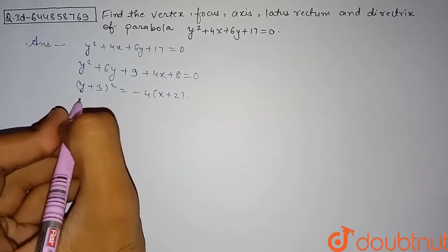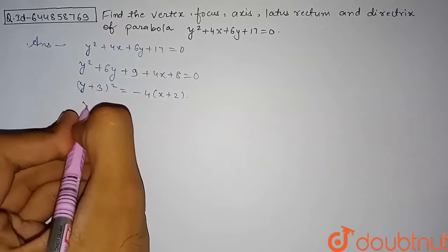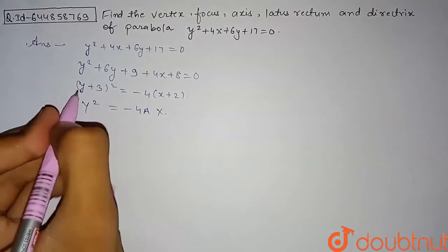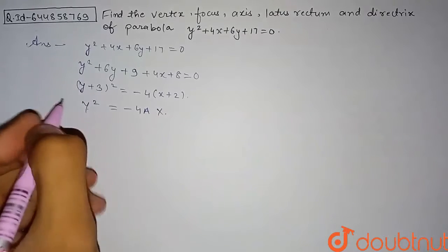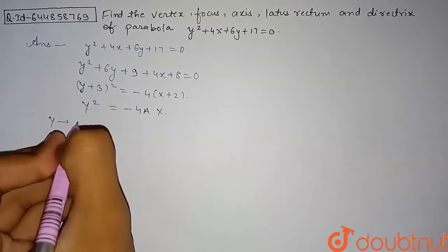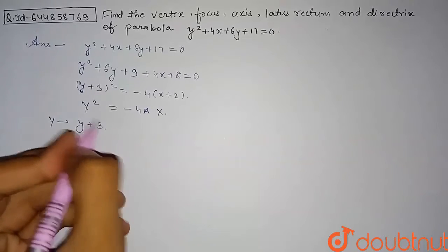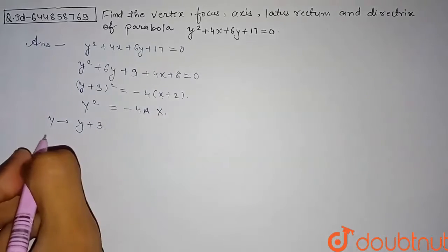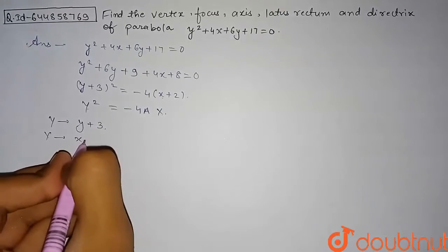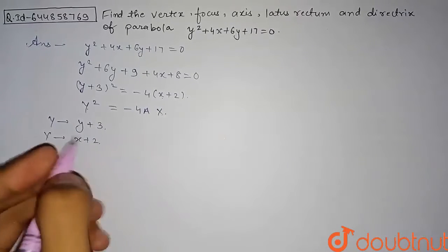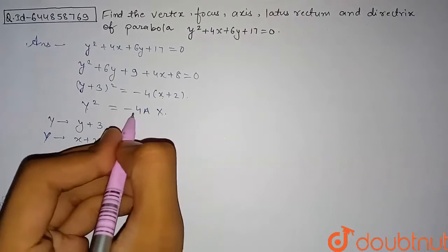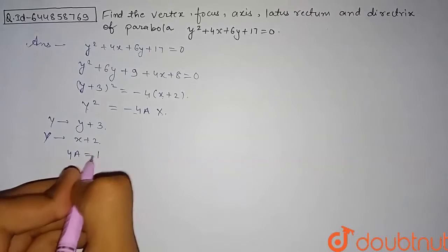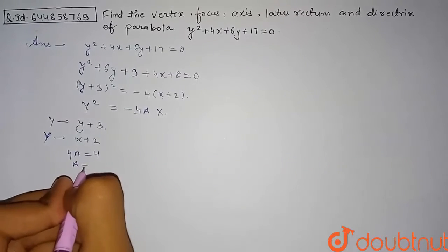We compare this parabola equation with the standard equation y² = −4ax. Here, y is replaced by (y + 3) and x is replaced by (x + 2) in any coordinate we need to find. From the comparison, −4a = −4, so 4a = 4, giving us a = 1.